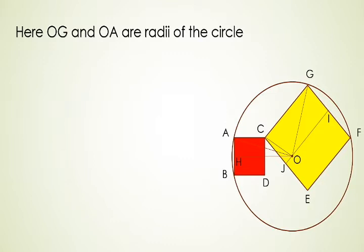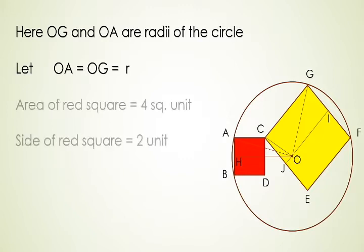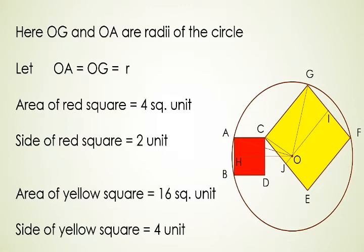Here OG and OA are radii of the circle. Let the radius be equal to R. Now area of red square is given 4 square units. So side of the red square will be under root of 4 that will be 2 units and area of yellow square is 16 square units. Hence under root 16 is equal to 4 that is the side of the yellow square.